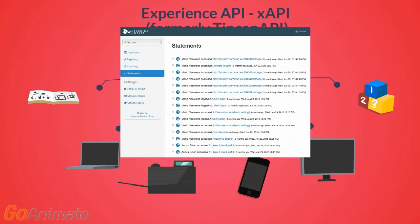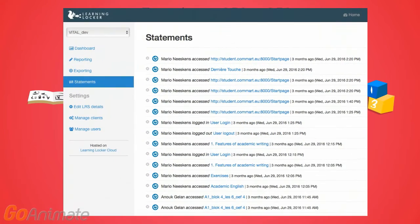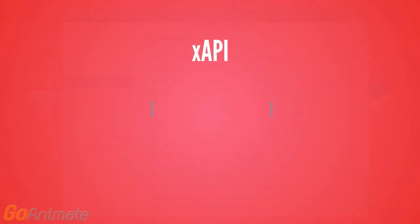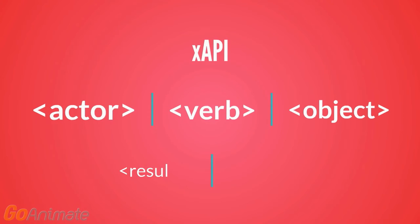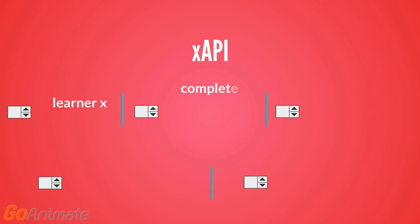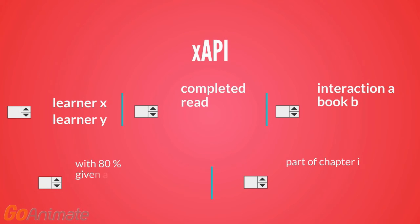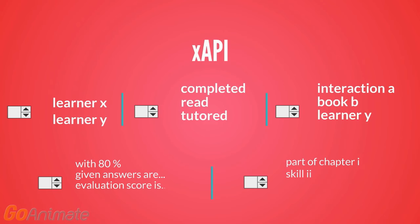According to the xAPI specification, a learner's activities are logged in activity statements. Statements consist of an actor, a learner, a verb and an object, and optionally a result and a context. With this vocabulary, very diverse activities can be tracked, including many details about the learning context.